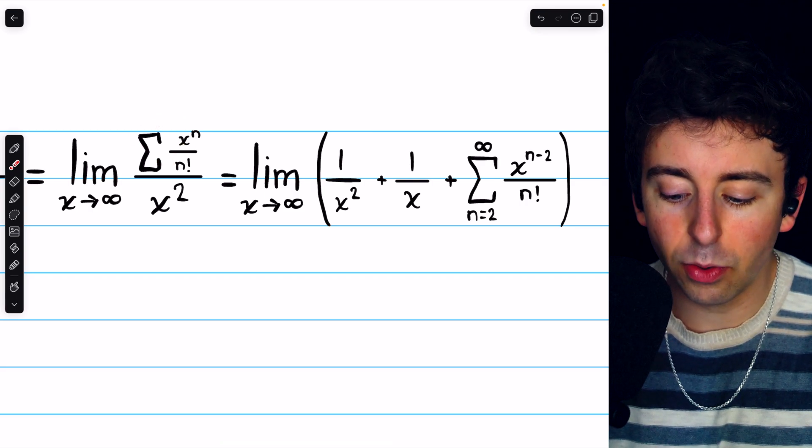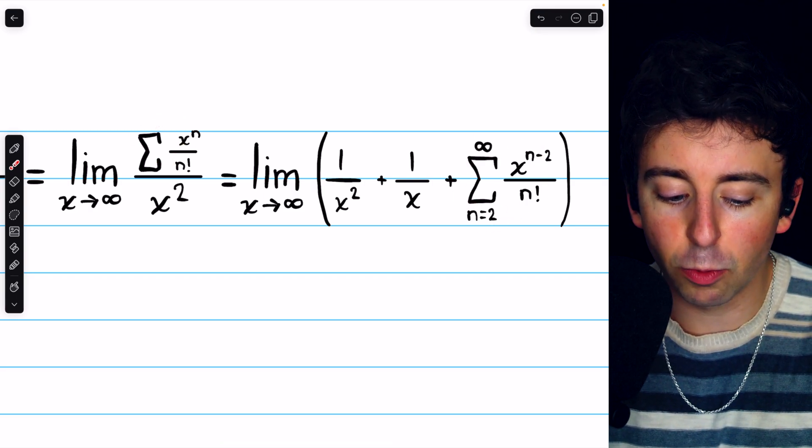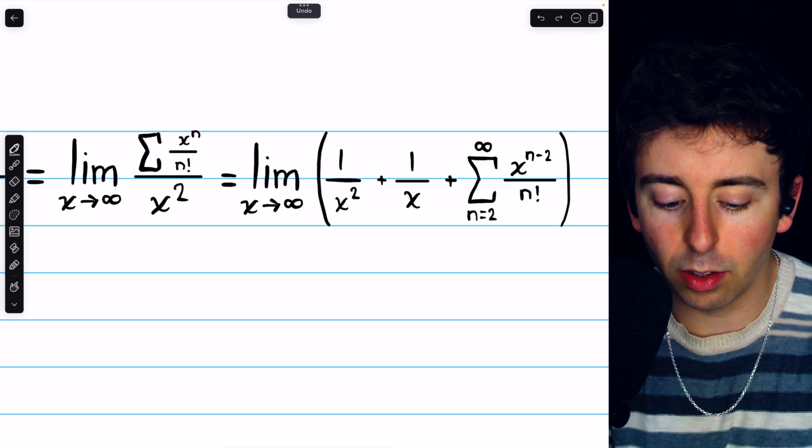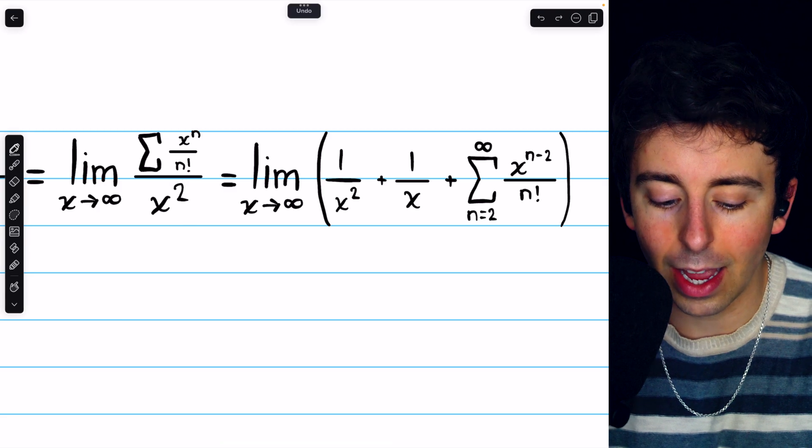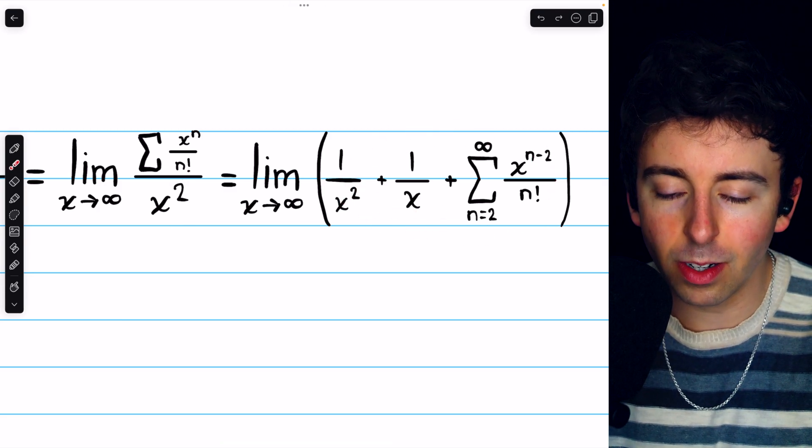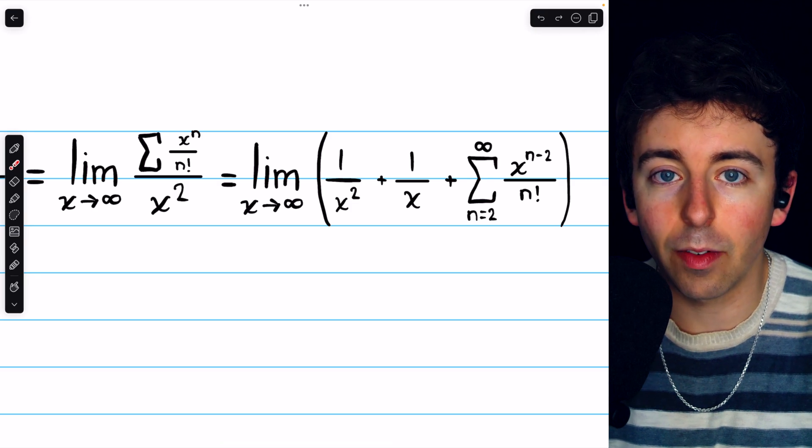Every other term of the series we could leave as originally written, except with 2 subtracted from the exponent of x, because of course every term has been divided by x squared. And on looking at this expression, it's quite easy to see the behavior of this limit.